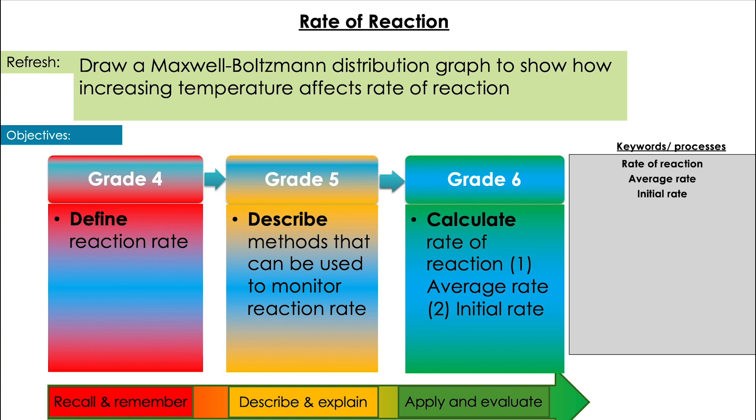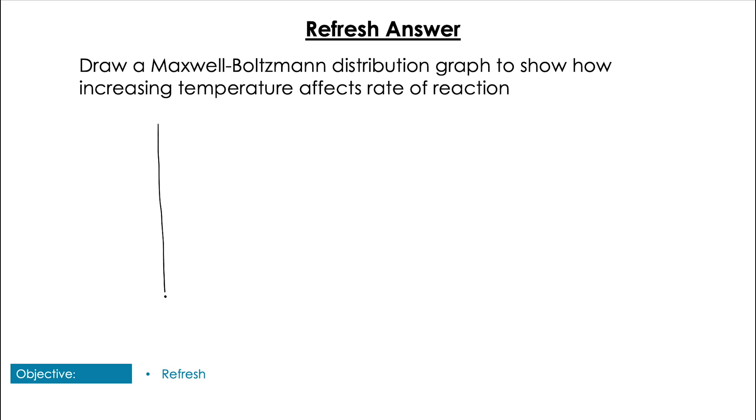To get you started, a little review of last video. Draw a Maxwell-Boltzmann distribution graph to show increasing temperature and its effect on the rate of reaction. When we have Maxwell-Boltzmann distribution curves, we have energy on the x-axis and number of particles on the y.